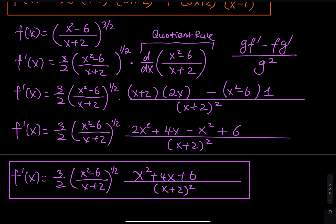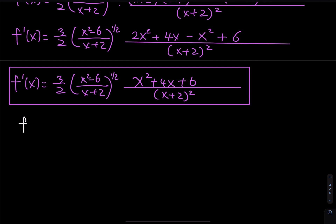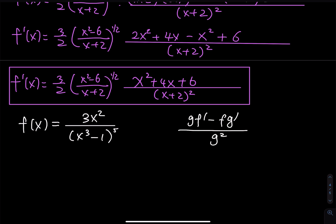You don't need to rewind the video. We have f of x equals 3x squared divided by x to the third minus 1, raised to the fifth power. If you just look at this, this is purely a quotient rule. But since it's raised to the fifth power, when you take the derivative of the denominator, there is a chain rule. The quotient rule is gf prime minus fg prime divided by g squared.